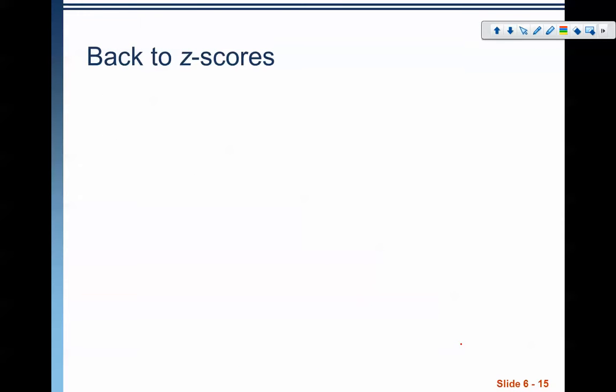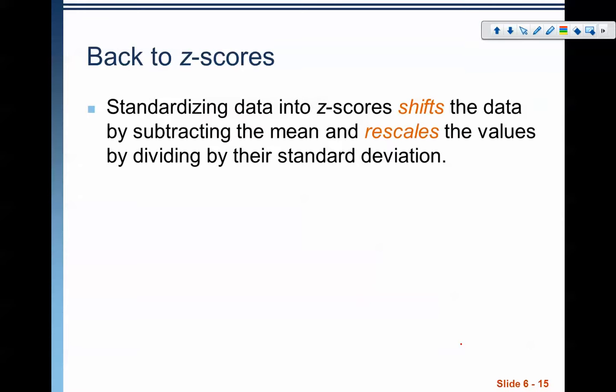Why does this and how does this relate to Z-scores? This is where we'll end this video today. Standardizing data into Z-scores is a shifting in the data. We are shifting the data by subtracting the mean, and then we're rescaling the data by dividing by the standard deviation.